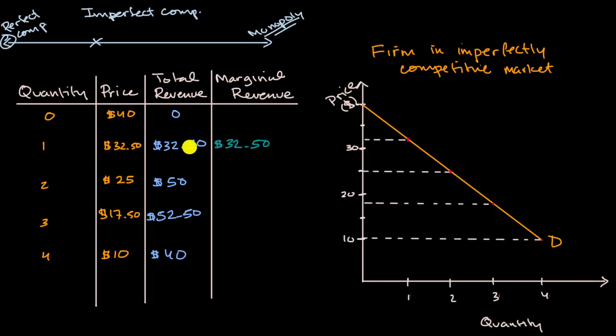And so you're already seeing that there's a discrepancy between our marginal revenue and our price. And we can keep going.